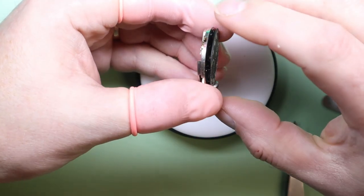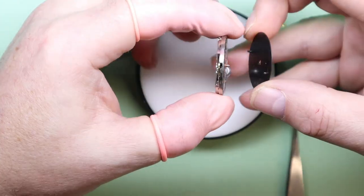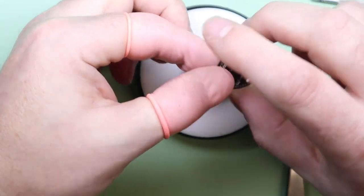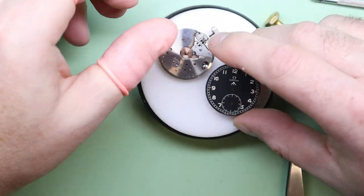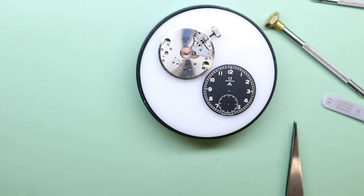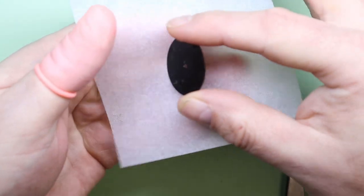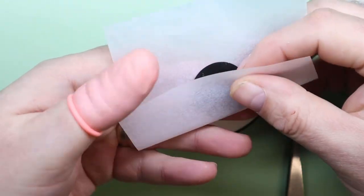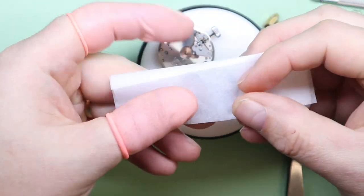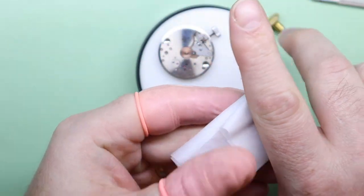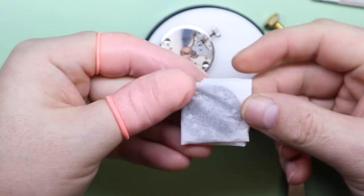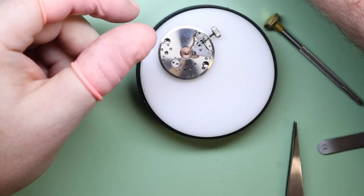Just using a small screwdriver to help the dial off the movement. Sometimes they don't want to come off super easy, so you just give it a little helping hand. I'm going to wrap the dial in a piece of acid-free paper just to make sure it's protected whilst it's in the cleaning tray. Don't want to get any scratches or dust on the dial.